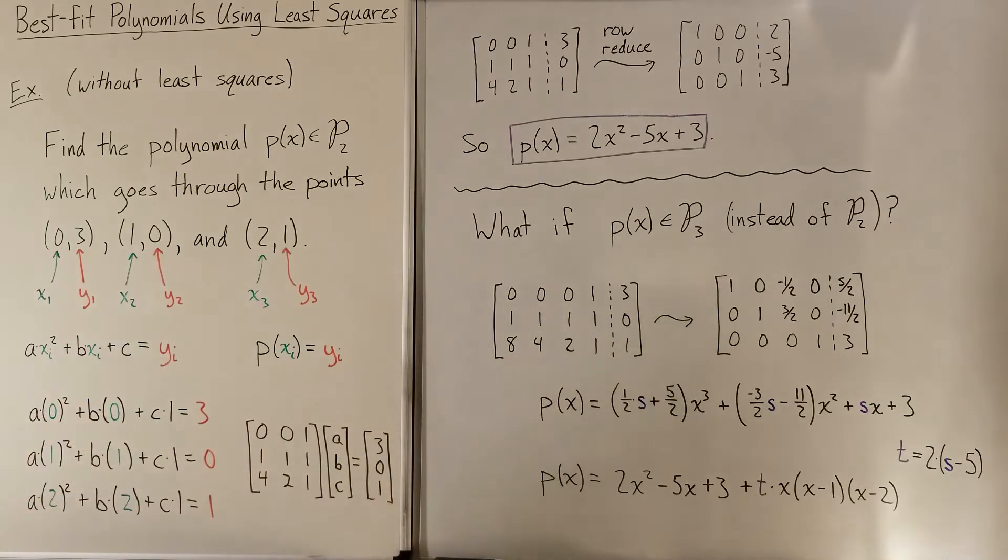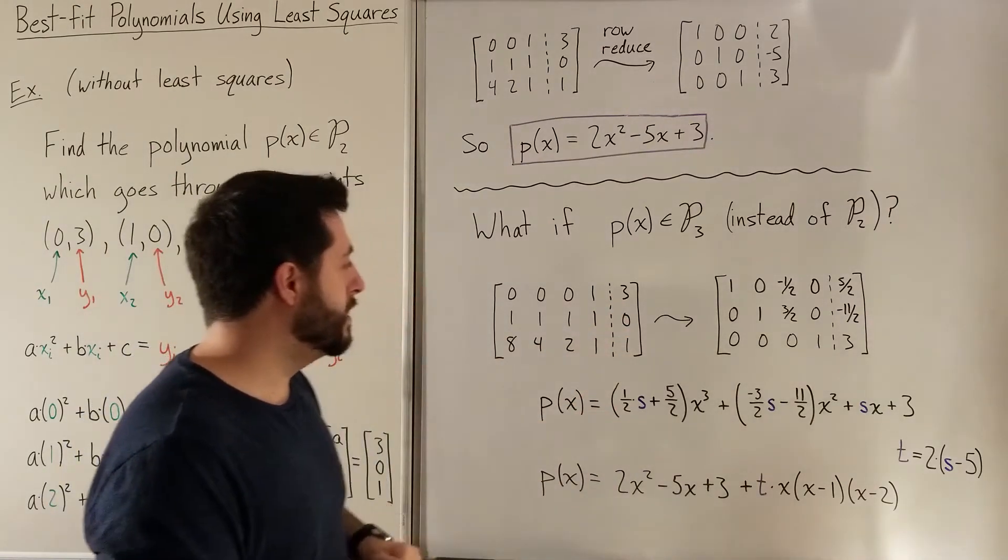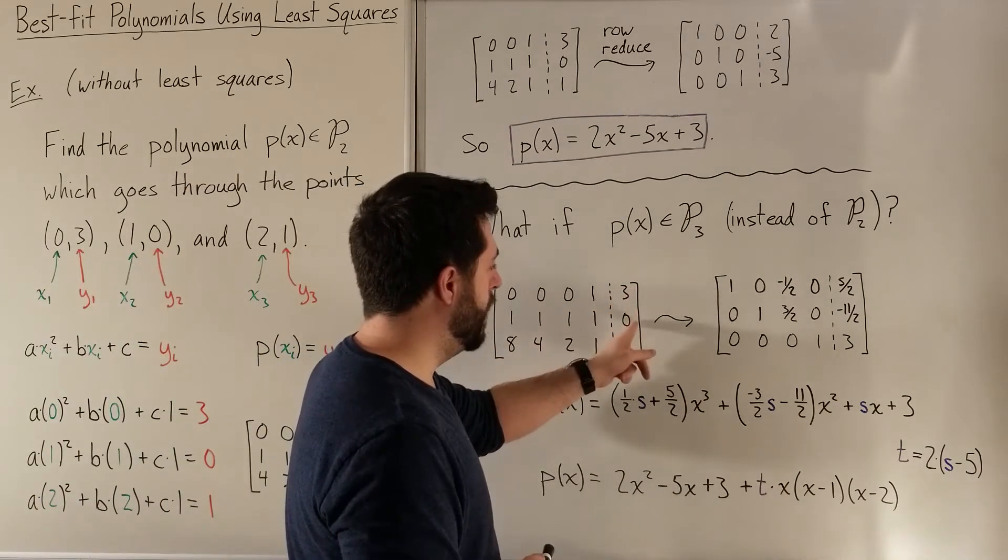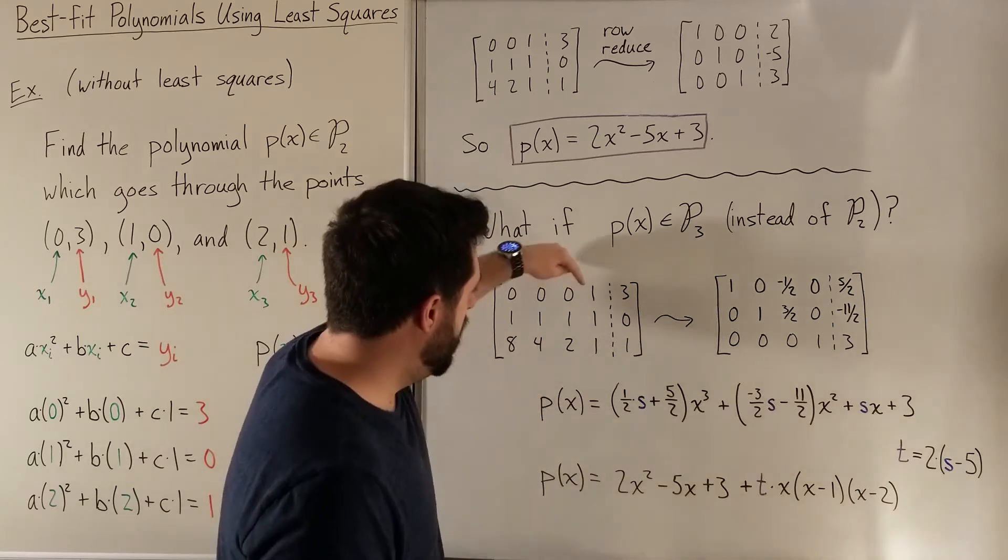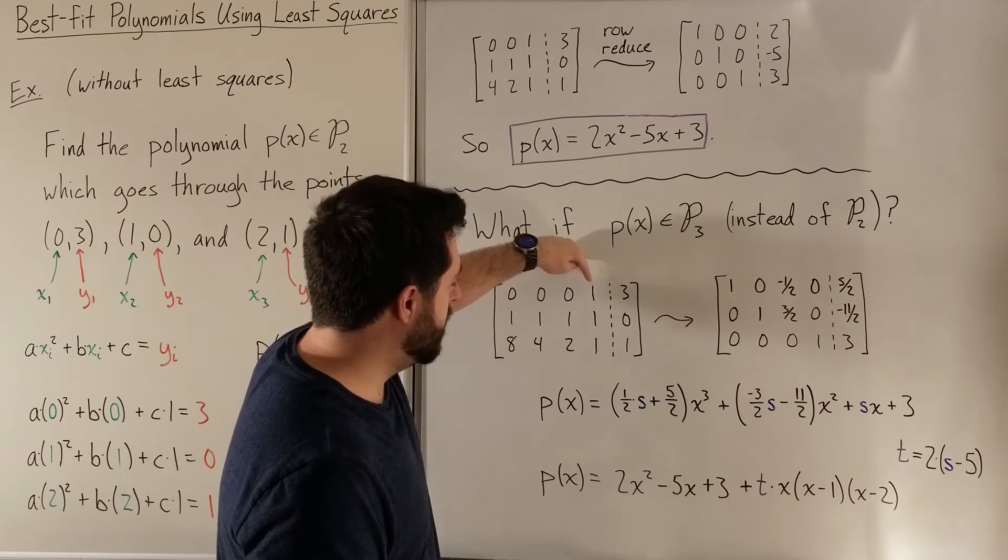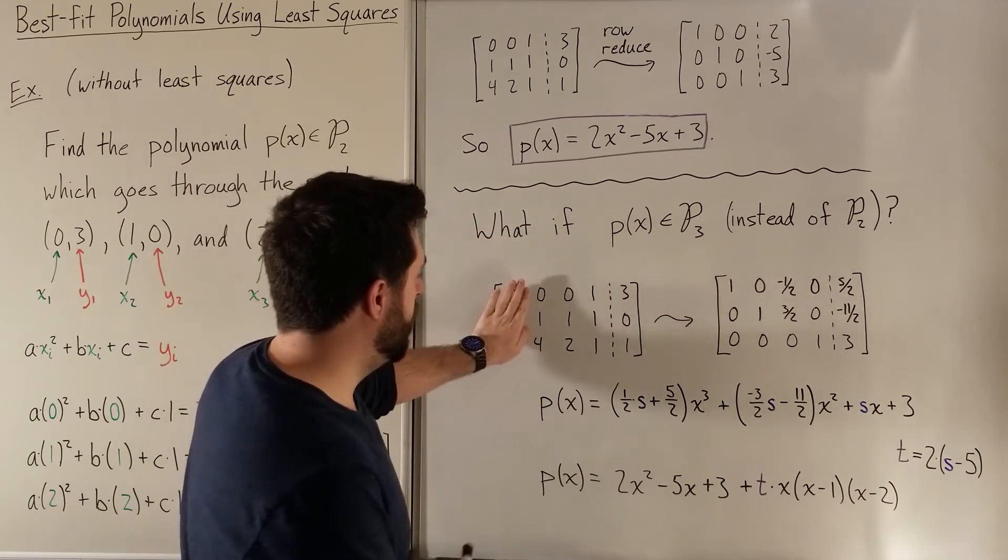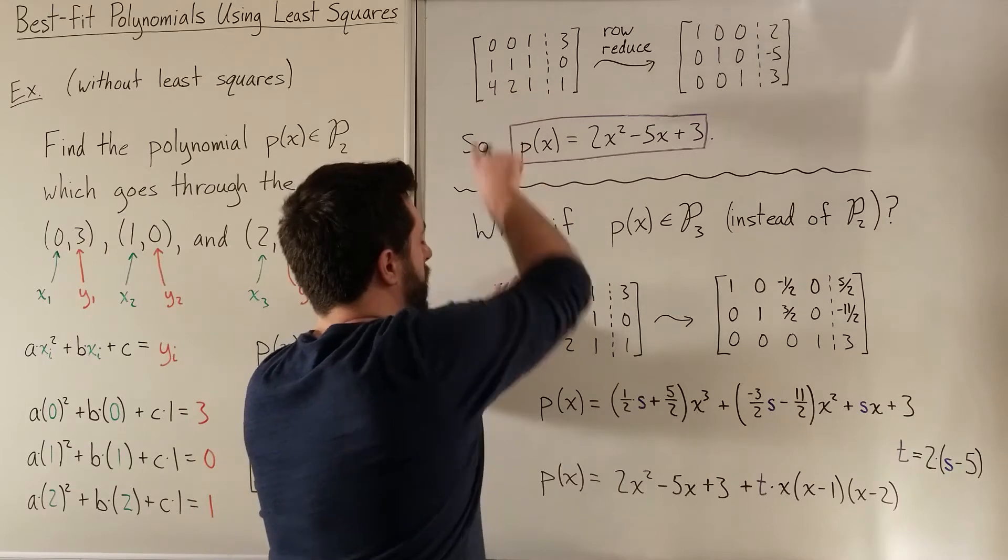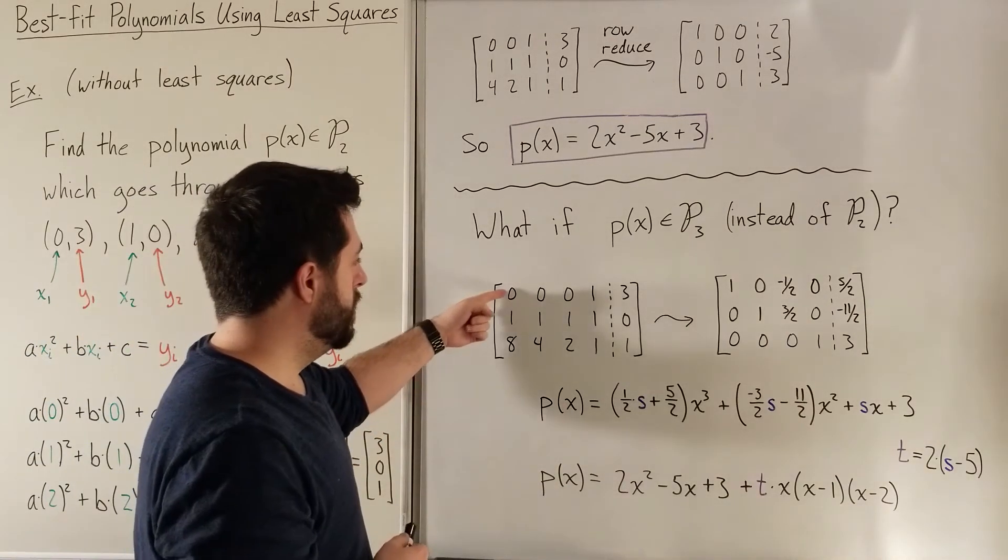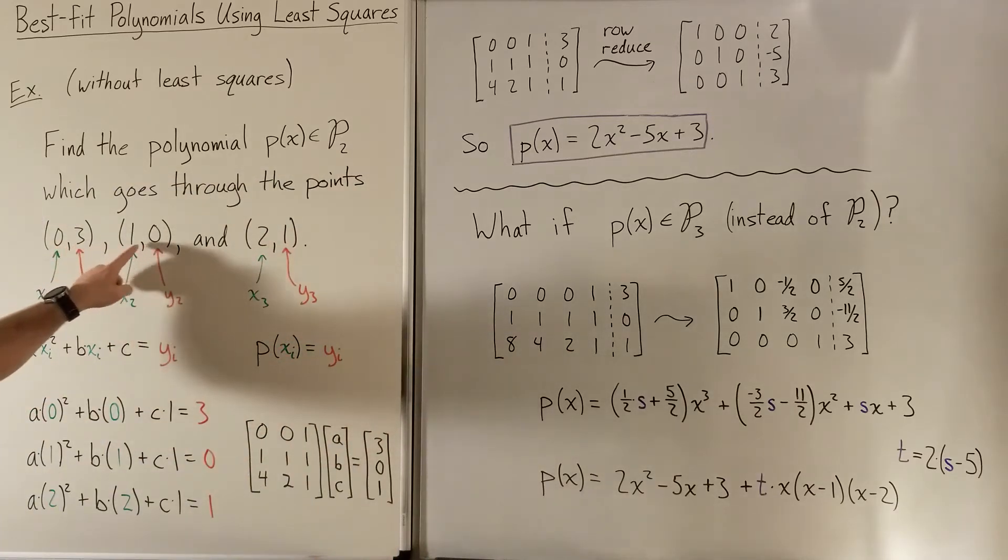So we can set up this exact same scenario. Instead of plugging all this stuff in, I'm just going to go straight to the matrix format. So we're still going to have this [3, 0, 1] as our y values. We still have the exact same three points that we're using. So these are just the y1, y2, y3 as before. These are our xi values raised to powers. So this is xi^0, xi^1, xi^2, and now we have an xi^3 column. So that is the exact same matrix we had before. And now we just have an extra column on the left corresponding to our cubic term. Okay, so 0^3, 1^3, and 2^3 corresponding to our three xi values.